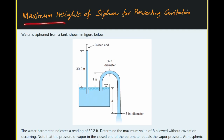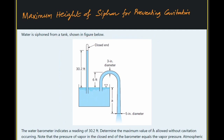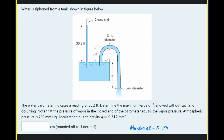This problem is about finding the maximum height of a siphon for preventing cavitation. Water is siphoned from an open tank as shown in the figure, discharging to the atmosphere. We need to determine the maximum value of H allowed without cavitation occurring. The water barometer indicates a reading of 30.2 feet. What is the maximum height possible without occurrence of cavitation?